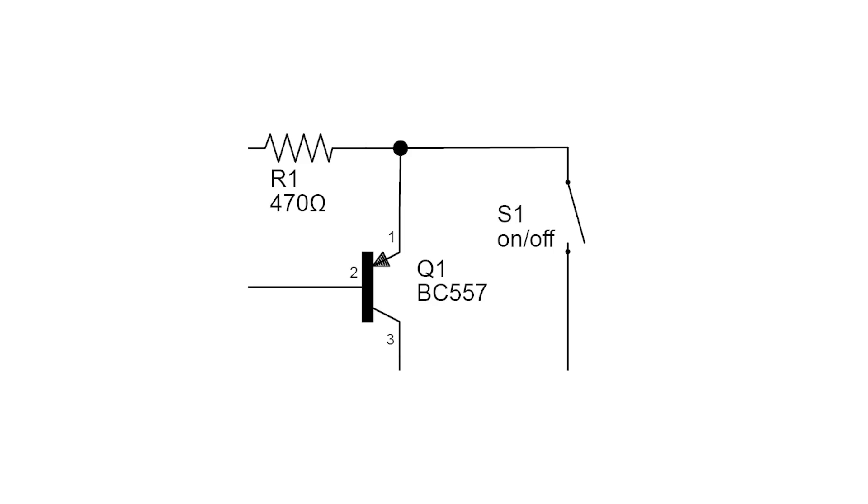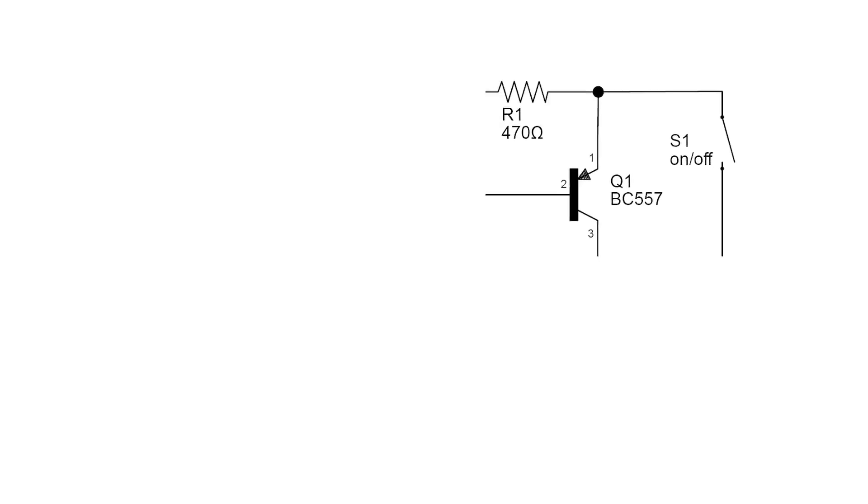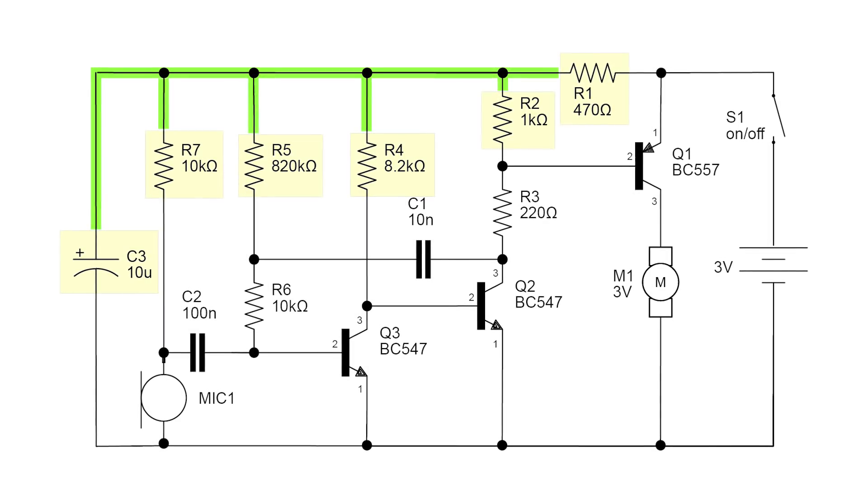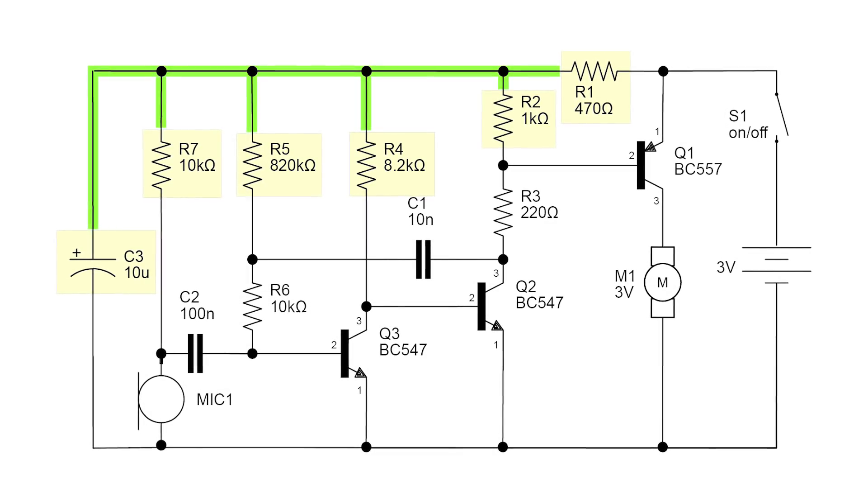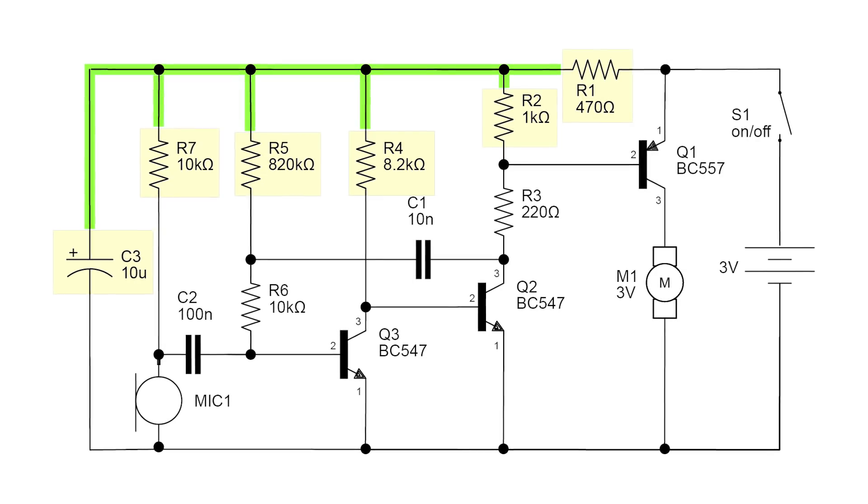The switch is connected to R1 and the emitter of Q1. The other end of R1 will be connected to R2, R4, R5, R7, and C3.